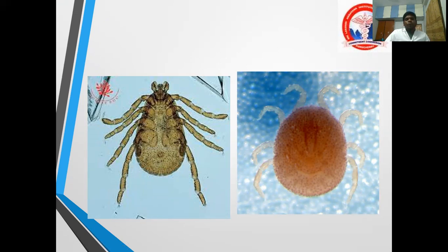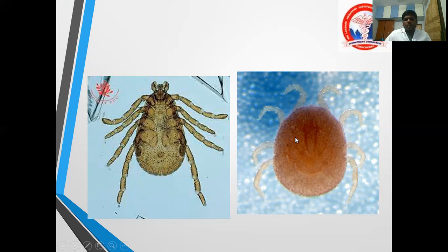Now, these two pictures show arachnids — not Insecta — because we can see four pairs of legs. Under Arachnida we have ticks and mites. On the left side is a hard tick and on the right side is a soft tick. To differentiate: if you can see the head part from above, it is a hard tick. In a soft tick, the head is not visible from above — it is on the ventral side.